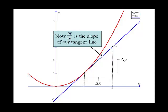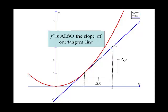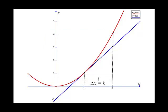Remember, the derivative at one is also the slope of our tangent line, so delta y over delta x is equal to f prime of one. A lot of times we call that delta x h.